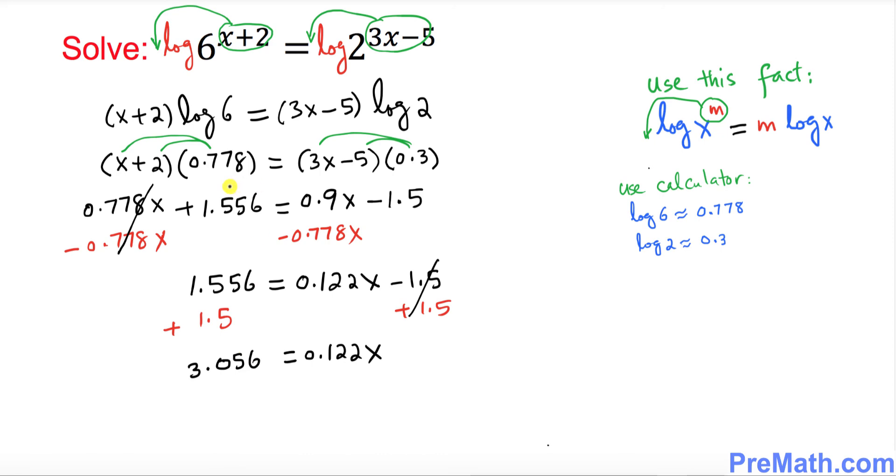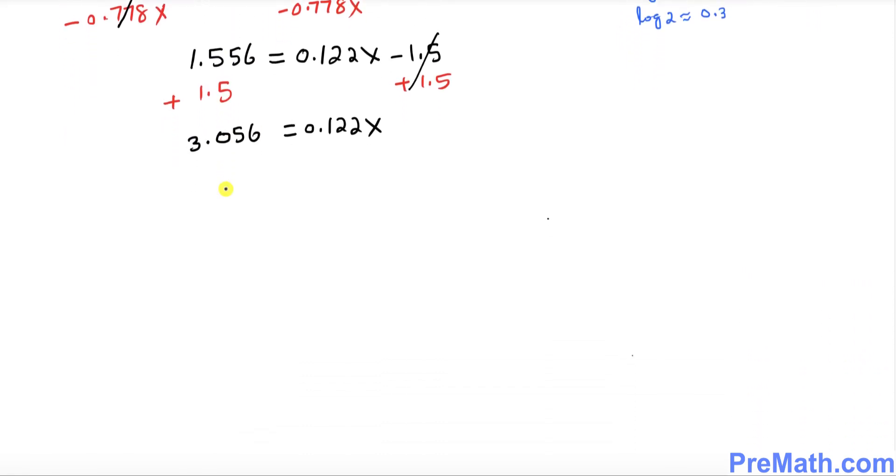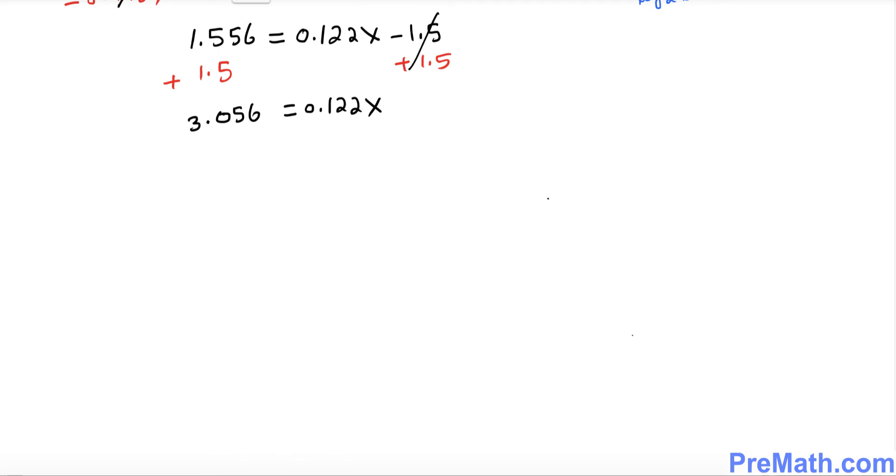Now the next thing we want to do is divide both sides because we want to isolate x. We divide both sides by 0.122, so this is gone.